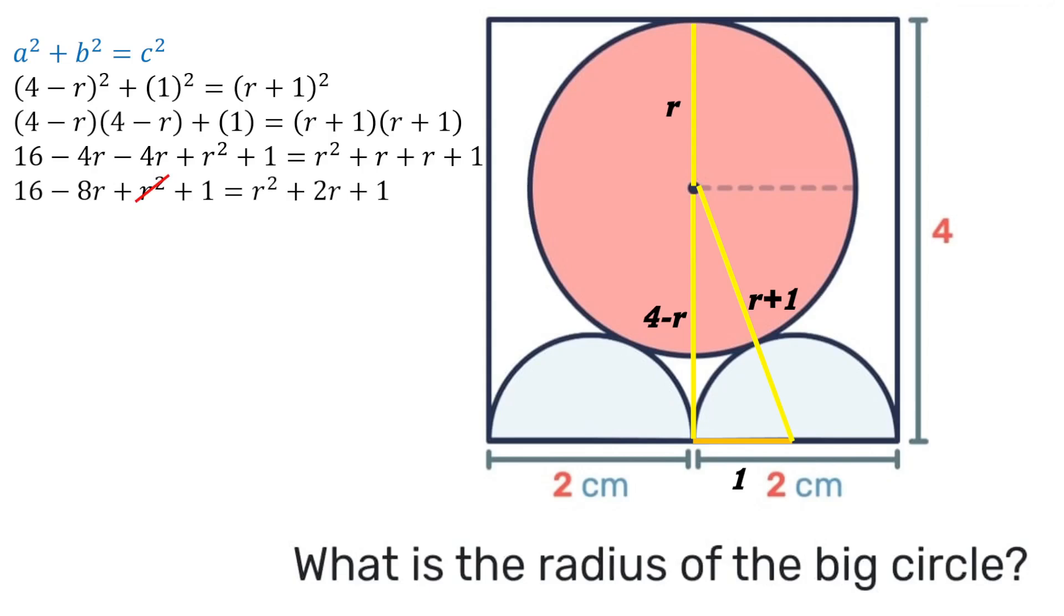We notice that we have r² on both sides, so we can cancel those. We're also adding 1 on both sides, so we can cancel those as well. That will leave us with 16 - 8r = 2r. Transposing, we'll have 16 = 2r + 8r, which gives us 16 = 10r. Therefore, r will be equal to 16 divided by 10, which gives us the answer: r = 1.6 centimeters.